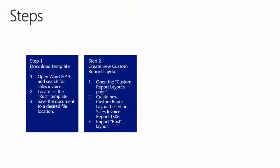Step 2: Create new custom report layout. We will open the custom report layout page, create a new custom report layout based on the sales invoice report 1306, then import the Rust invoice template and view the report with its new layout.